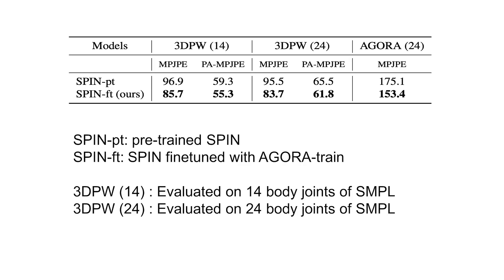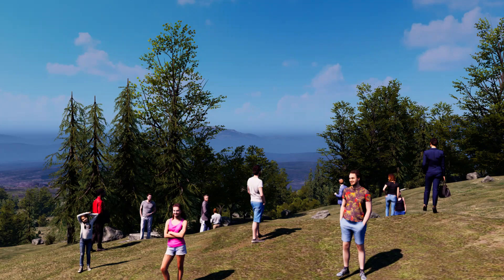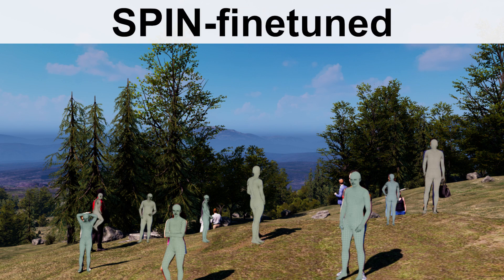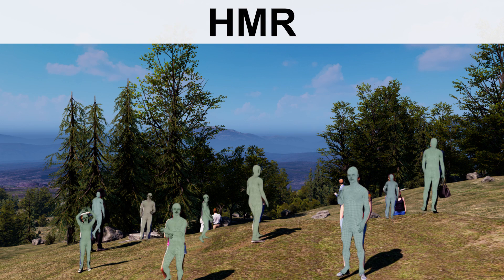AGORA provides a challenging evaluation dataset to test current methods, but it also provides training data to improve them. For example, we use the AGORA training set to fine-tune SPIN. We find that despite being synthetic, fine-tuning on AGORA improves the performance of SPIN on 3DPW, a natural image dataset. We also evaluate the state-of-the-art human pose and shape estimation baselines on the AGORA test set.